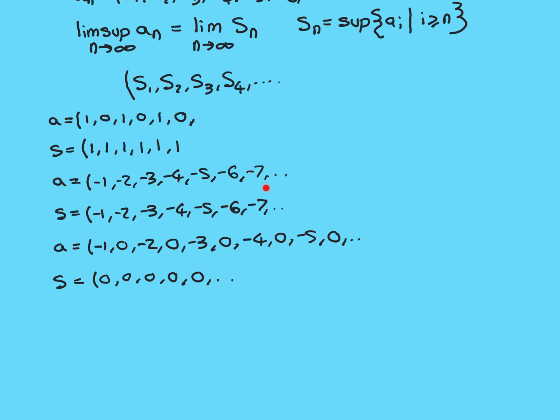You might be tempted to conclude that the problem with that example is that it isn't bounded below. We knew the sequence had to be bounded above for the limit superior. Maybe the reason one worked and one didn't is because of being bounded below versus unbounded below. But being bounded below isn't quite necessary — indeed, when we come to the limit inferior it will be necessary to be bounded below, but for the limit superior, being bounded above is the absolute criterion.